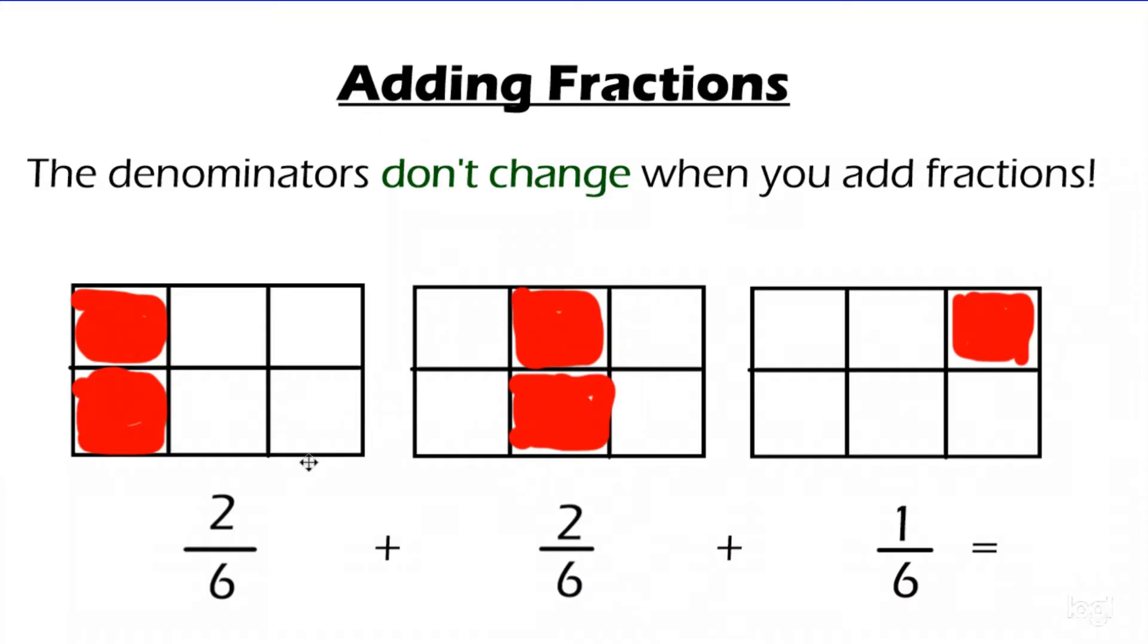So adding fractions. We have 2/6 plus 2/6 plus 1/6. We can very clearly see that all the denominators are the same. Now, a lot of people, when you add these, you might get 5/18. And that's a common mistake, but when we add fractions, the denominators don't change. So my answer here is actually going to be 5/6. We're going to add the numerators, and then the denominators are going to stay the same.